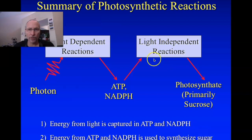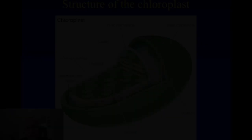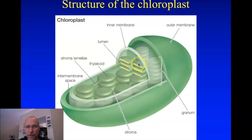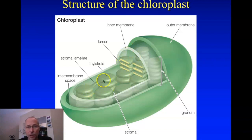So what we want to do is understand first the light-dependent reactions, then look at the light-independent reactions, and see exactly how we build all these organic compounds. Both sets of reactions occur inside the cell in an organelle called the chloroplast. It's one of the organelles that defines plants. It has an inner membrane very much like the inner membrane of the mitochondria, and attached to that inner membrane are other membranes called thylakoids. The thylakoids form stacked disk-like structures called grana, or granum.